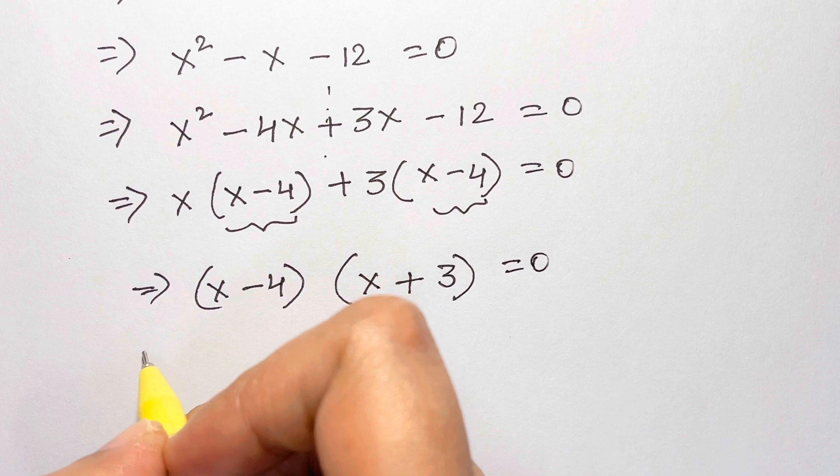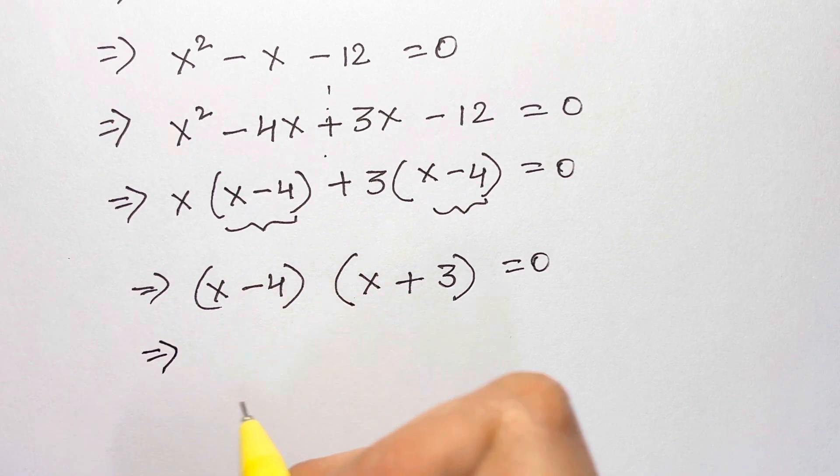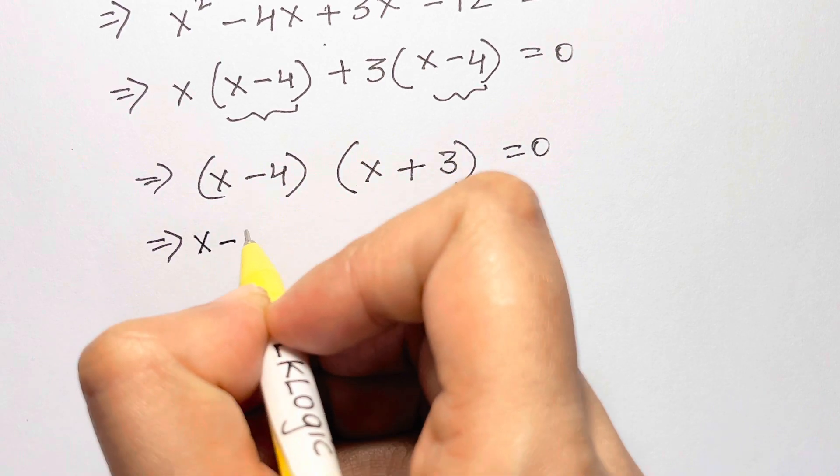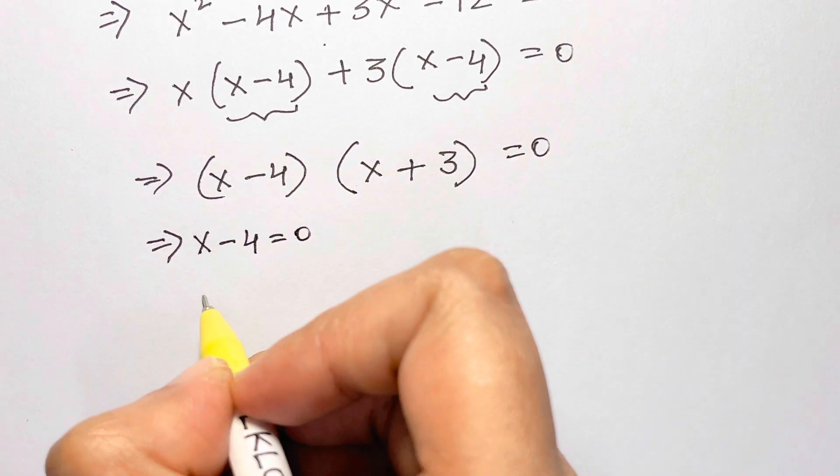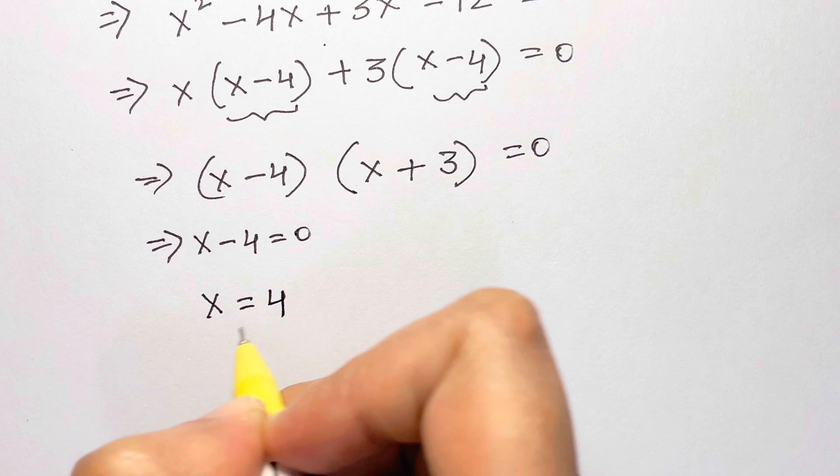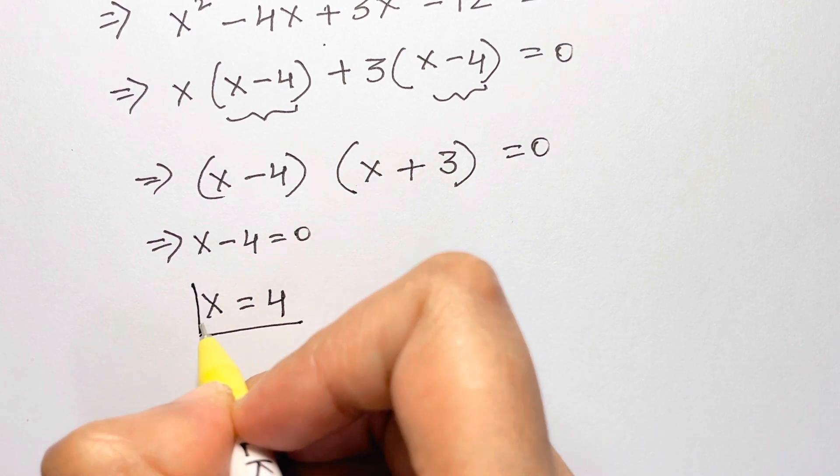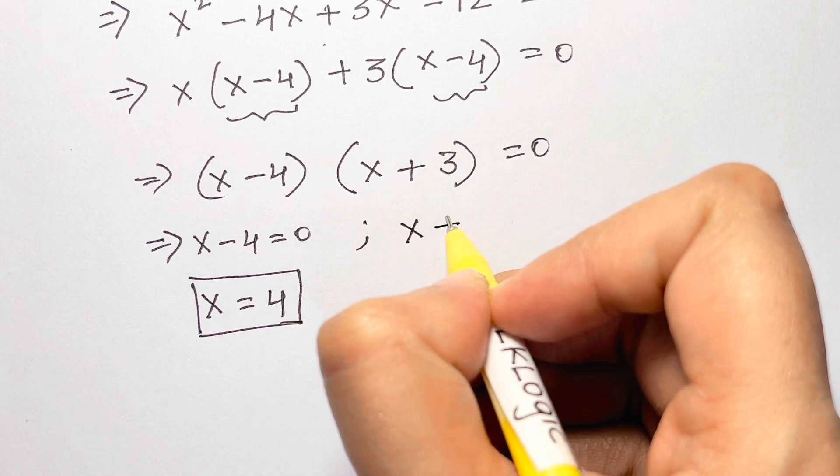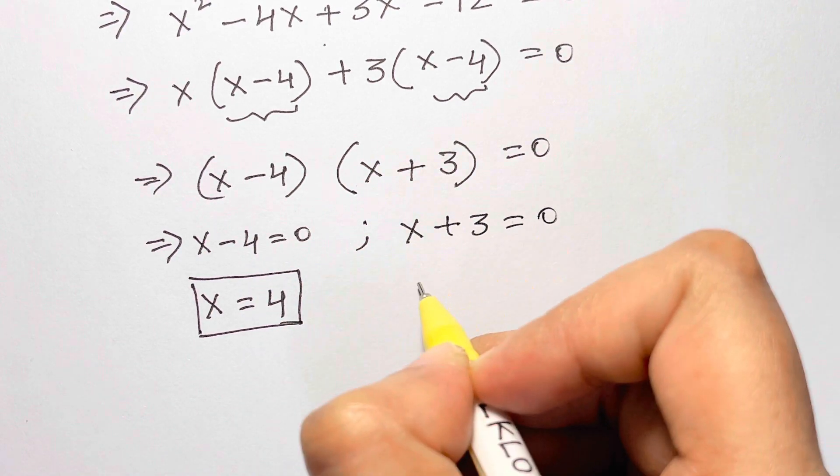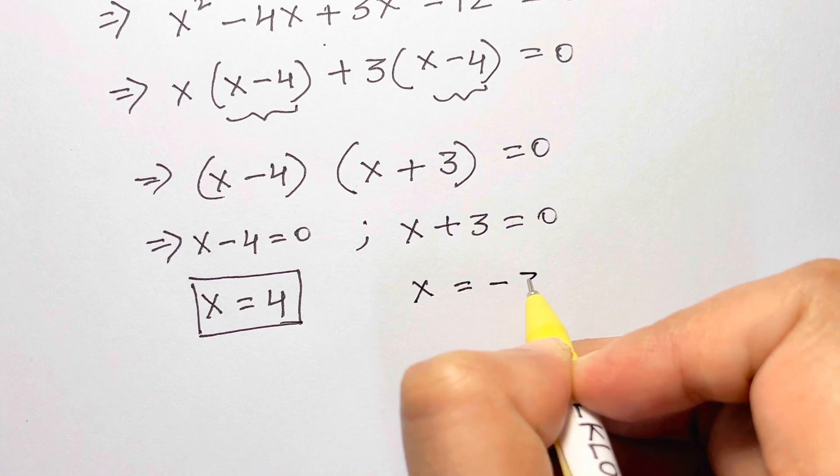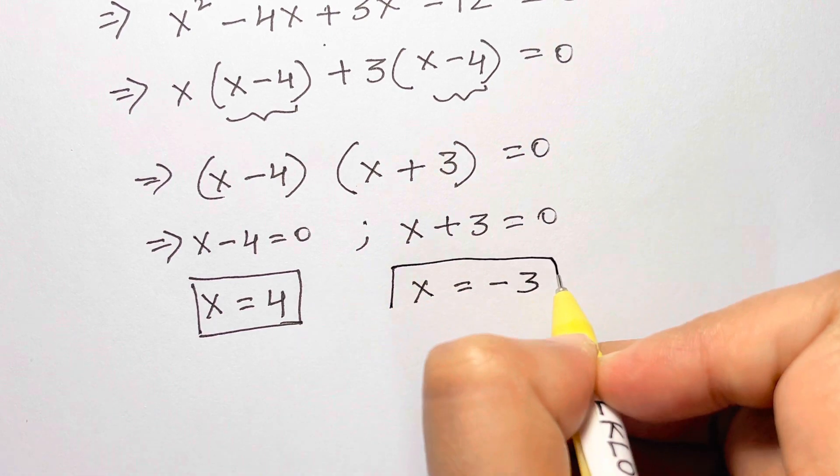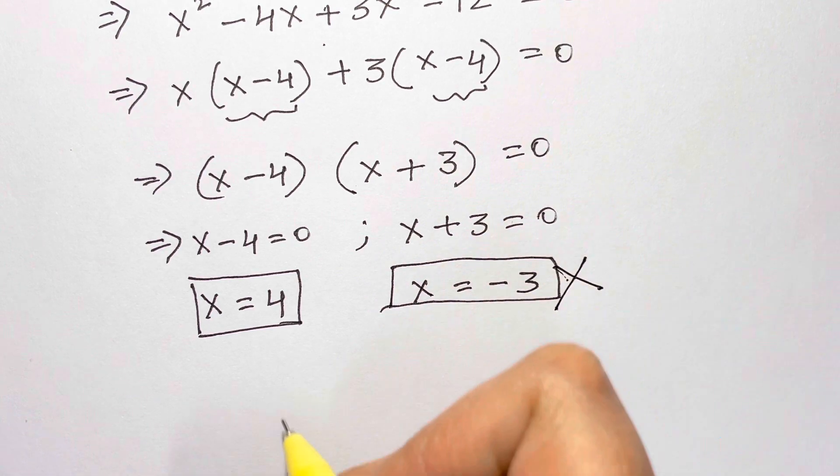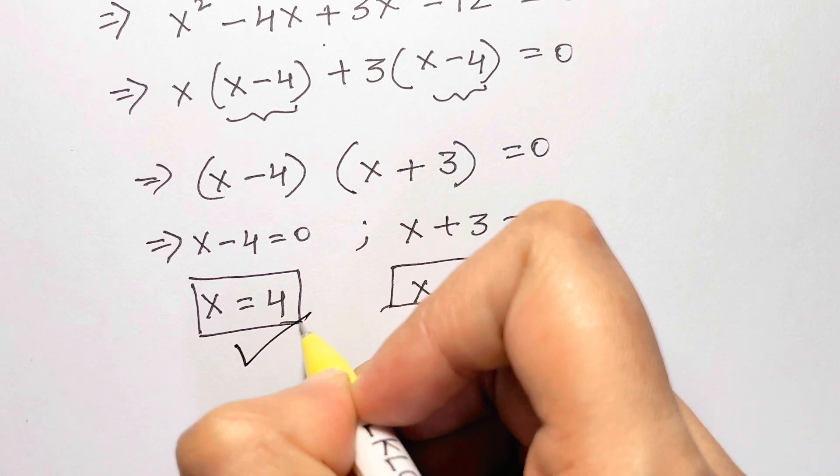So we got two factors: x minus 4 is equal to zero and x plus 3 is equal to zero. If x minus 4 is equal to zero, x is equal to plus 4. Another solution is x plus 3 is equal to zero. When we solve, x is equal to negative 3. But as it is negative, it has been rejected. This is the correct solution: x is equal to 4.